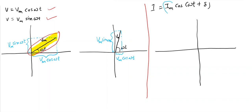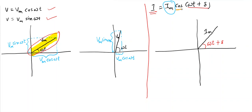I will consider a vector of length Im. Then I will take this vector at an angle — which angle? This angle ωt + δ. Then I can say that this is the phasor representation of current i. If I want to find how much the current value is, all I need to do is look at the appropriate component.